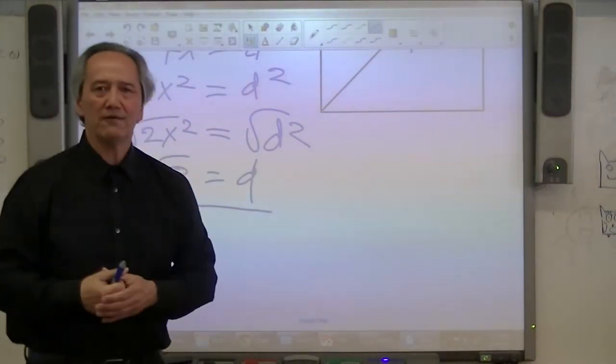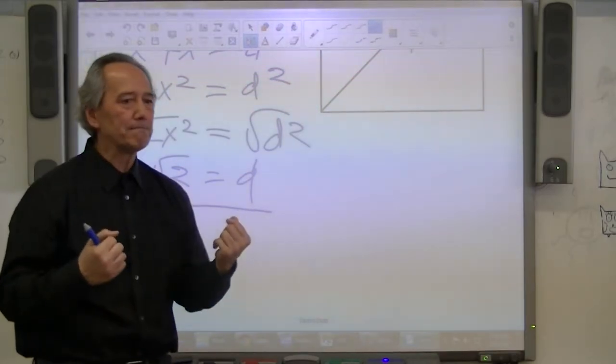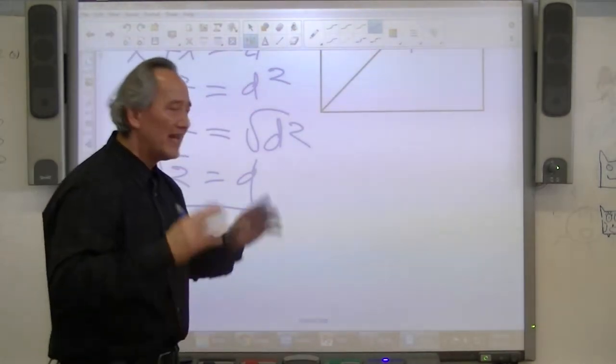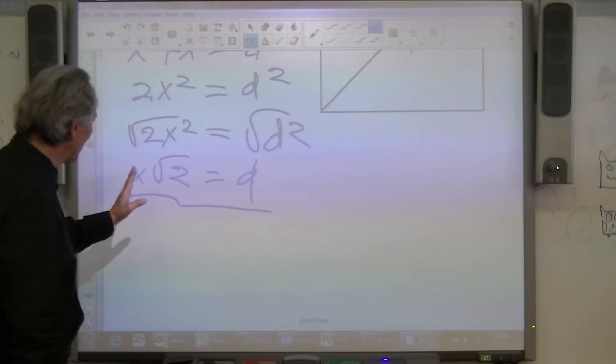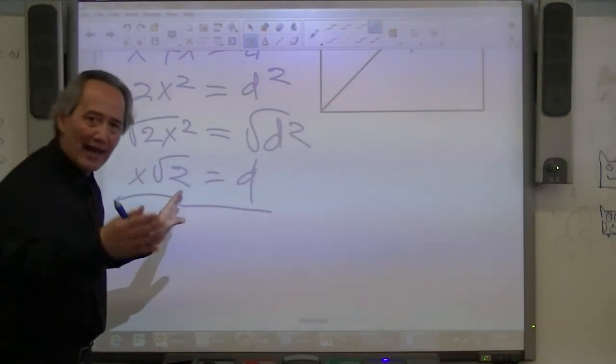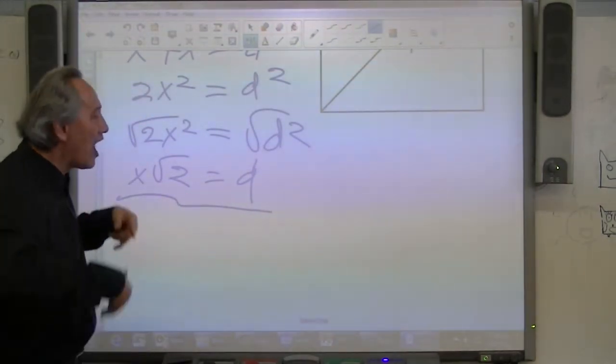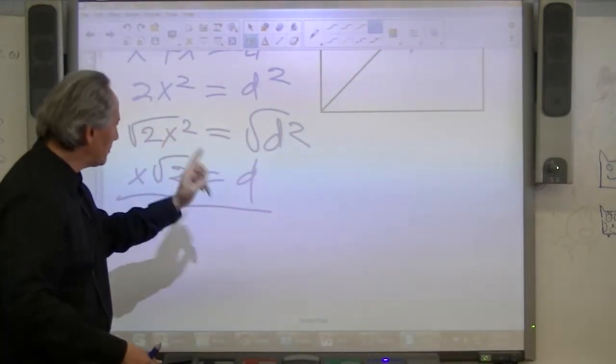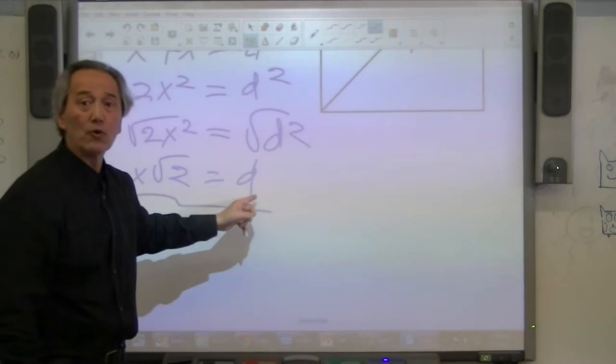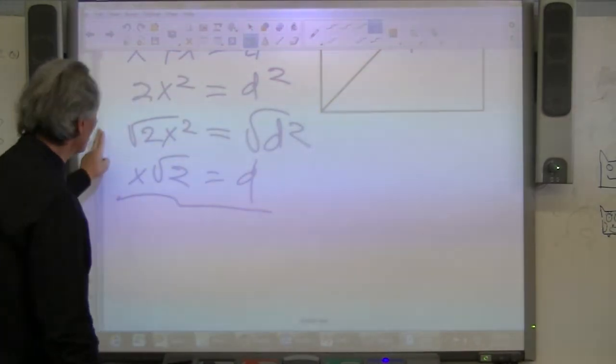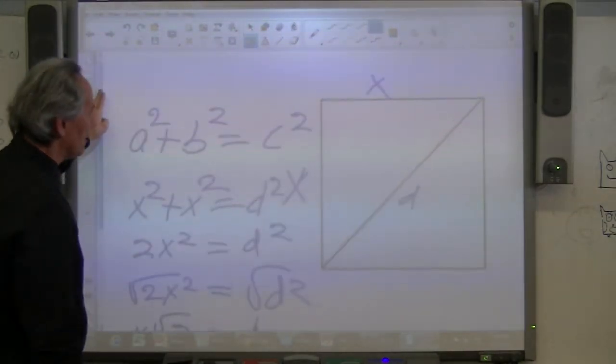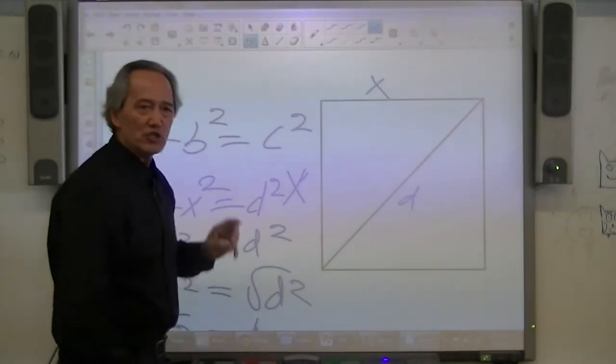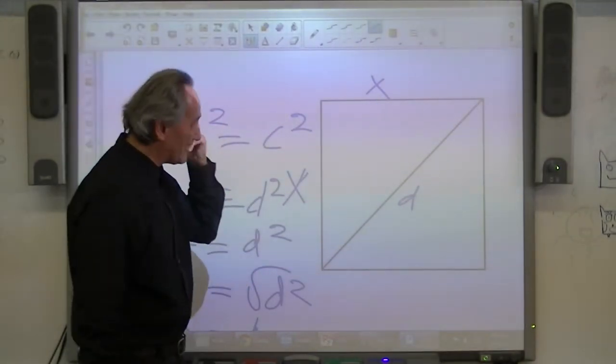What does this state for us? What information does it provide? Here's the information it provides. It states that X being the leg times the square root of 2 will in fact help me to calculate or compute the length of D or the hypotenuse in this case.